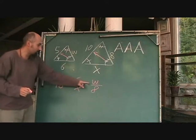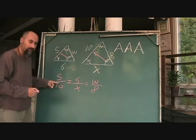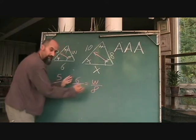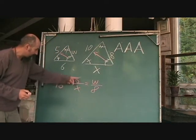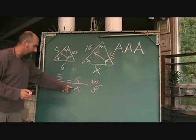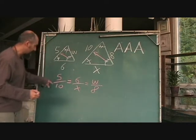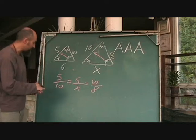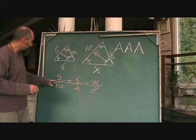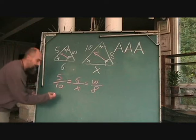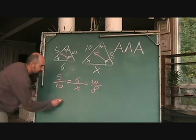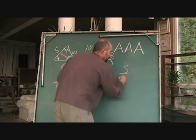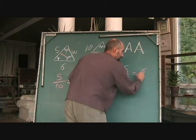You can't solve this equation all at once because an equation means you're only solving with one equal sign. So what you can do is combine these two to solve for x, and combine these two to solve for w. To solve for w and x, you would say 5 over 10 is equal to 6 over w.